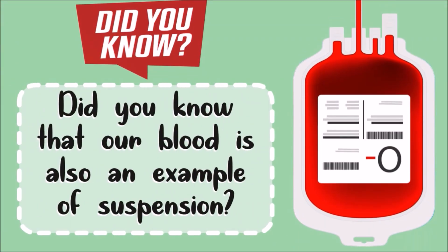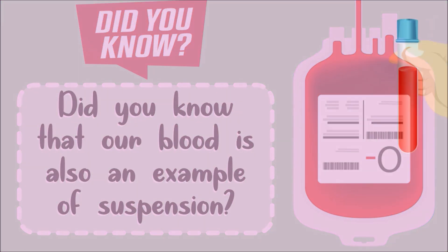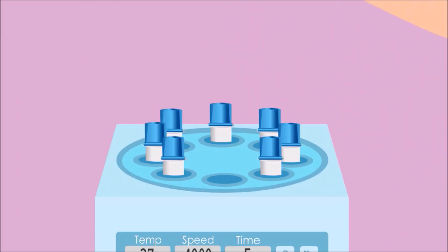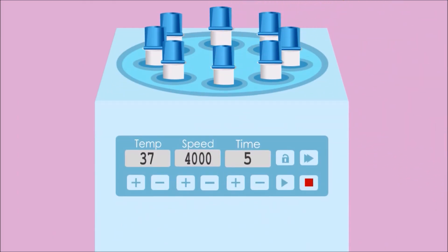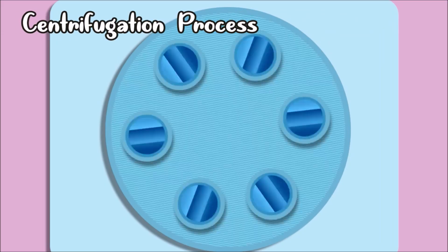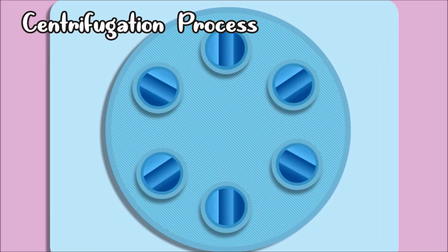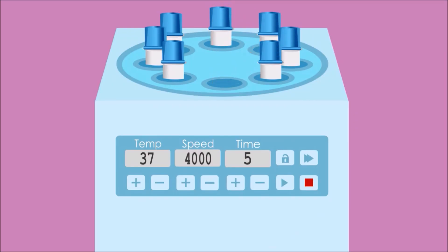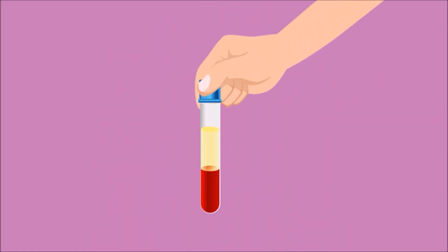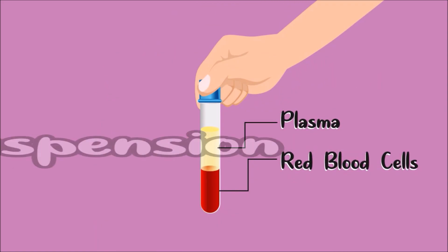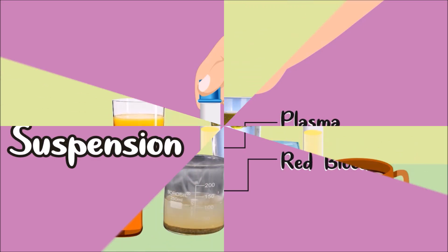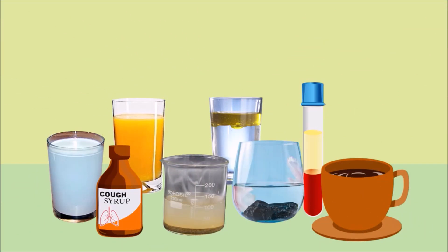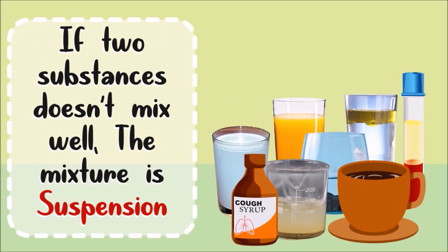Did you know that our blood is also a suspension? That's right! When blood inside a test tube undergoes the process of centrifugation, you will clearly see that plasma is separated from blood cells. Therefore, if two substances don't mix well, it is a suspension.